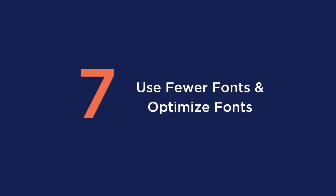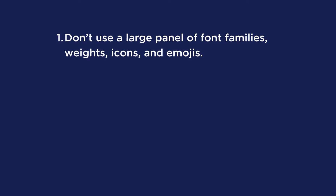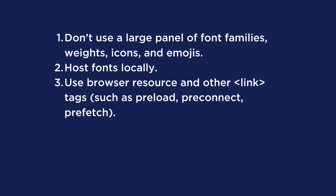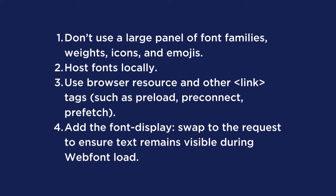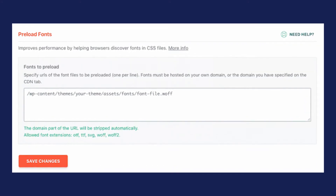Tip number seven is to use fewer fonts and optimize them. Manually, you can avoid large panels of font families, weights, icons, and emojis; host fonts locally; use browser resource tags such as preload, preconnect, and prefetch; and add the font-display swap property to ensure text remains visible during a web font load. Or you can use WP Rocket to optimize all your fonts as well.